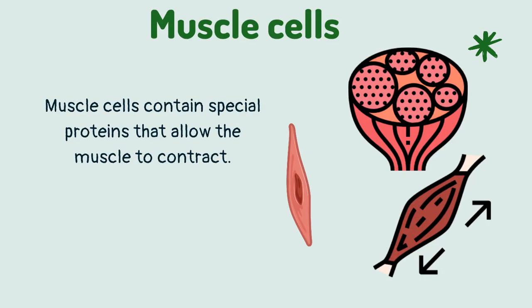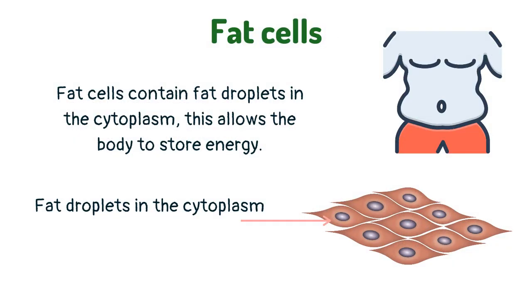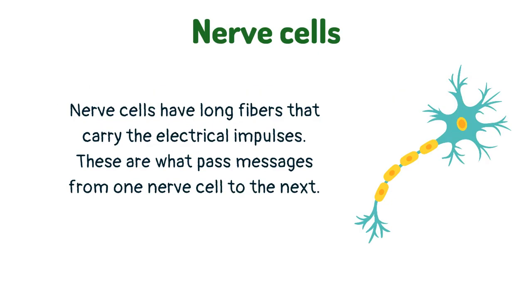Muscle cells contain special proteins that allow the muscle to contract. Fat cells contain fat droplets in the cytoplasm, which allows the body to store energy. Nerve cells have long fibers that carry electrical impulses, which pass messages from one nerve cell to the next.